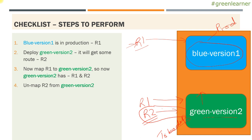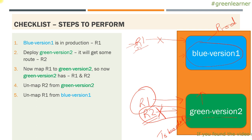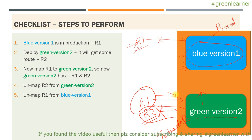The next question is how the traffic is divided between the existing version and the old version. As of now, we are taking only one instance in production, so 100% of the requests coming to R1 go to blue version one. Now that 100% will be divided into two because we have two instances serving R1 - 50% of requests will be served here, 50% will be here. You have unmapped R2, so R2 is no longer available. Only R1 is there. Unmap R1 from blue version one, test things and observe the behavior of the green version. If it is going as expected and there is no problem, go ahead and unmap R1 with the blue version. So now there is only route one, which is the existing one, and there is no URL which can access blue version one. Only green version two is accessible with R1. So without any downtime, we have successfully replaced this instance with this one.